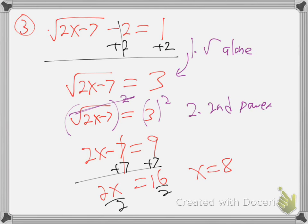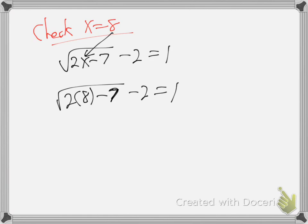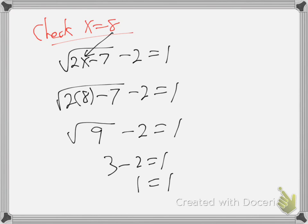Go back to the very first step and pop an eight in for x. Work out the numbers — use your calculator if you want — and see if the left side equals the right side. Let's do the check: the original equation is √(2x − 7) − 2 = 1. Plug in eight: two times eight minus seven — sixteen minus seven is nine. Square root of nine is three. Three minus two is one. One equals one — it's good! Made the equation true, so the answer is really eight. It didn't lie to us that time.